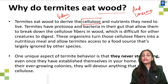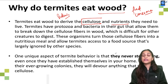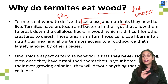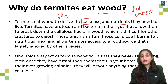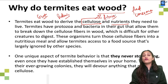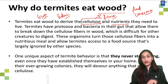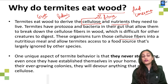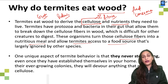Termites feed on and consume wood because they derive cellulose from it — they need cellulose and nutrients. In their digestive system, in their gut, there is protozoa which helps them break the cellulose fibers. These organisms convert cellulose into a nutritious meal and allow termites access to a food source that other species cannot utilize.